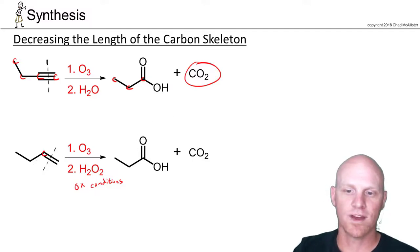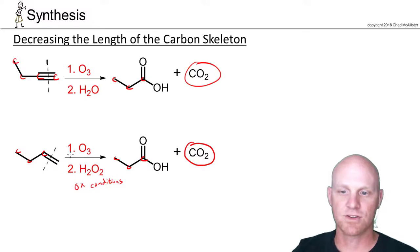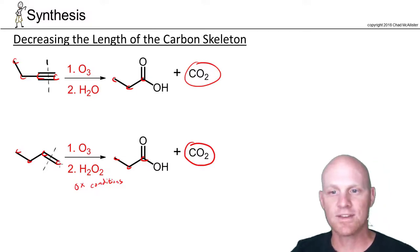The key is on one side we've got a three carbon chain, so you end up with a three carbon carboxylic acid or under reducing conditions a three carbon aldehyde. Same thing on the other side, CO2 is given off for that terminal carbon. We started with a four carbon chain and ended up with only three in our carboxylic acid, with the other one being given off as CO2.